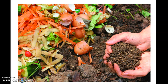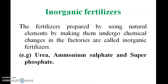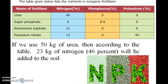Inorganic fertilizer is prepared by using natural elements by making them undergo chemical changes in factories. Examples include urea, ammonia sulfate, sulfur, phosphate, etc. If we use 50 g of urea, according to the table, 23 g of nitrogen will be added to the soil. NPK stands for nitrogen, potassium, and phosphorus.